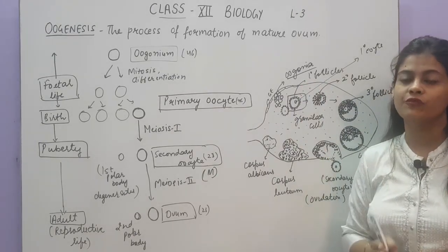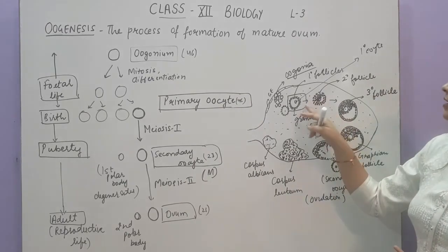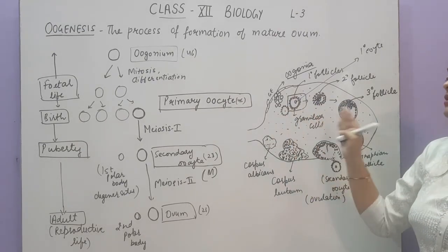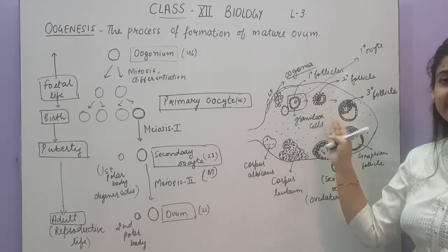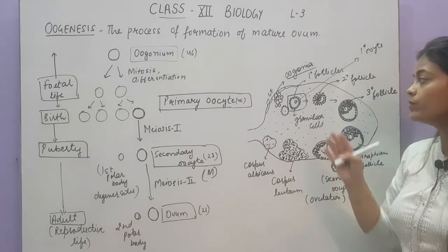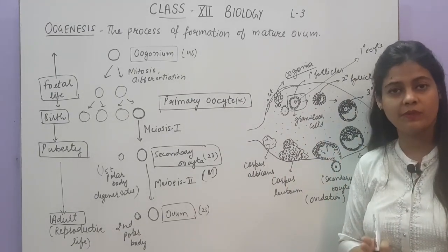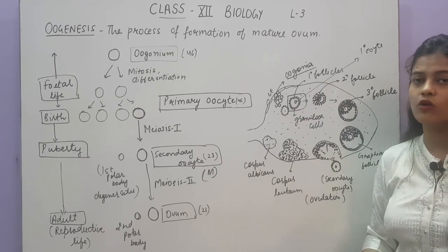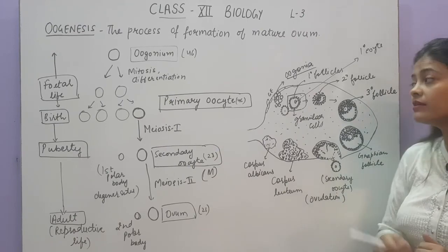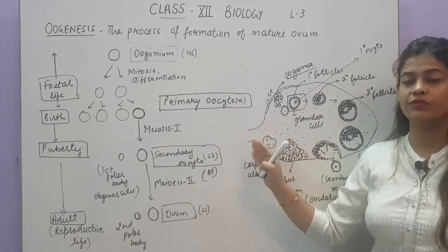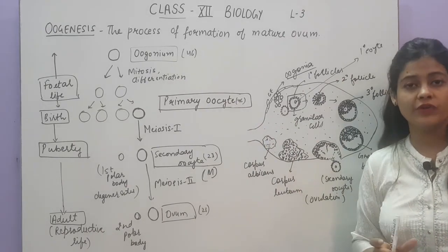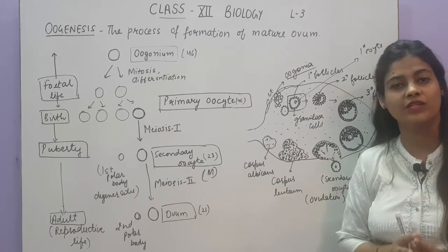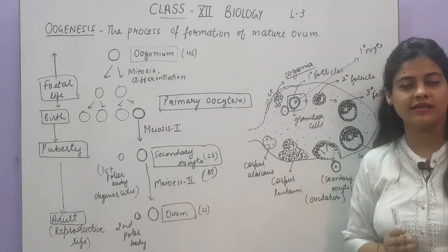The number of primary follicles in the female at birth is fixed. From birth till puberty there are so many primary follicles — in the lakhs. But when puberty is attained and they have to convert into secondary follicles, many will degenerate. Only 60,000 to 80,000 primary follicles will be left in the ovary. No new oogonia will be formed after birth. The number of primary follicles present at puberty is fixed, and we can estimate how many eggs will be produced in the female's reproductive life.